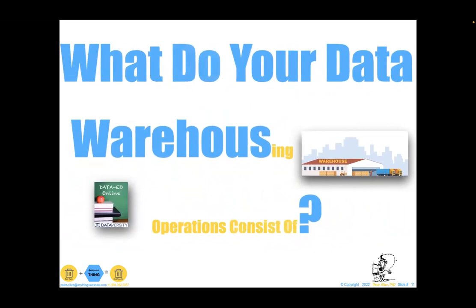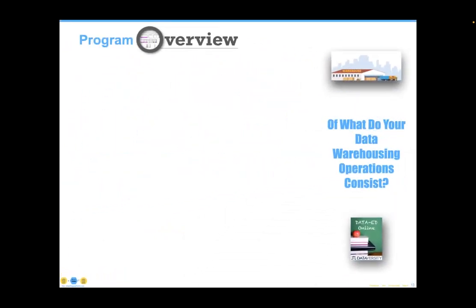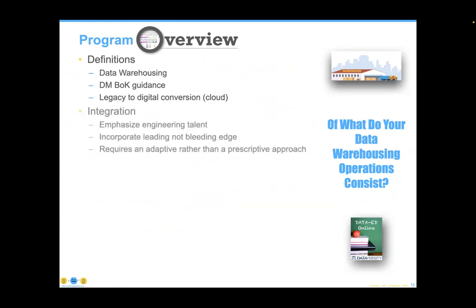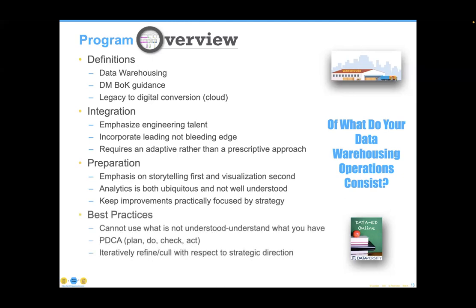Let's take a premise and look at it from four different perspectives. First, defining what we mean broadly by data warehousing; looking to the DMBOK for specific guidance; looking at it in the context of the legacy-to-digital conversion most organizations are experiencing, typically involving cloud facilities. We'll break that into two parts: first, the subset of data warehousing largely focused on addressing integration problems; and second, data warehousing capabilities involved in preparation of data in anticipation of being presented. We'll finish up with some best practices and then Q&A.